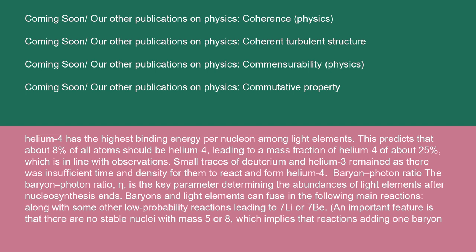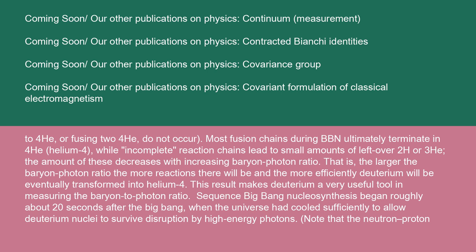Baryon-photon ratio: The baryon-photon ratio, eta, is the key parameter determining the abundances of light elements after nucleosynthesis ends. Baryons and light elements fuse in the following main reactions, along with some other low-probability reactions leading to 7Li or 7B. An important feature is that there are no stable nuclei with mass 5 or 8, which implies that reactions adding 1 baryon to 4He or fusing 2 4He do not occur. Most fusion chains during BBN ultimately terminate in 4He, helium-4, while incomplete reaction chains lead to small amounts of leftover 2H or 3He. The amount of these decreases with increasing baryon-photon ratio. That is, the larger the baryon-photon ratio, the more reactions there will be, and the more efficiently deuterium will be eventually transformed into helium-4. This result makes deuterium a very useful tool in measuring the baryon-to-photon ratio.